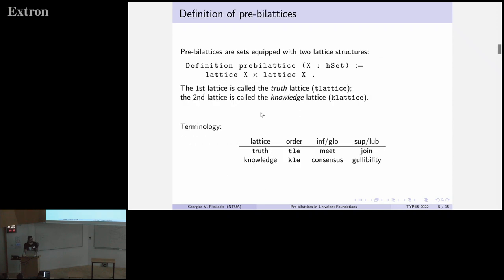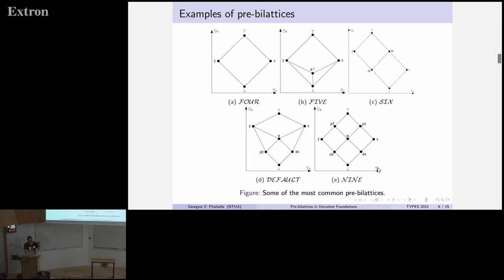Now, pre-bi-lattices are just pairs of lattices over the same set. We usually think of the one as the truth lattice and the other as the knowledge lattice. For the operators of the truth lattice, we use meet and join. For the operators of the knowledge lattice, we use the names consensus and gullibility.